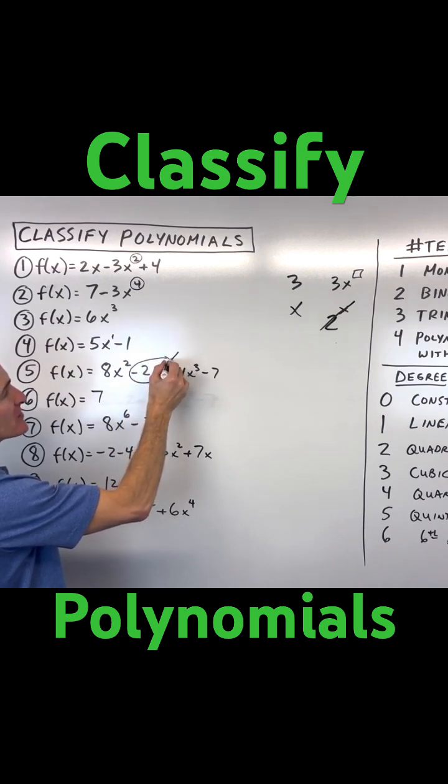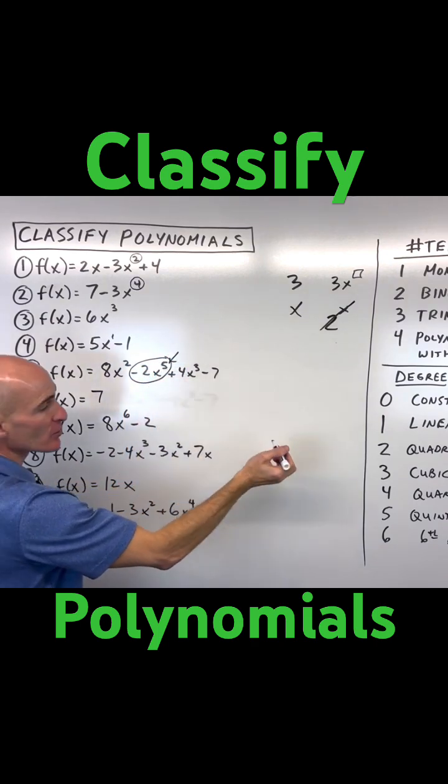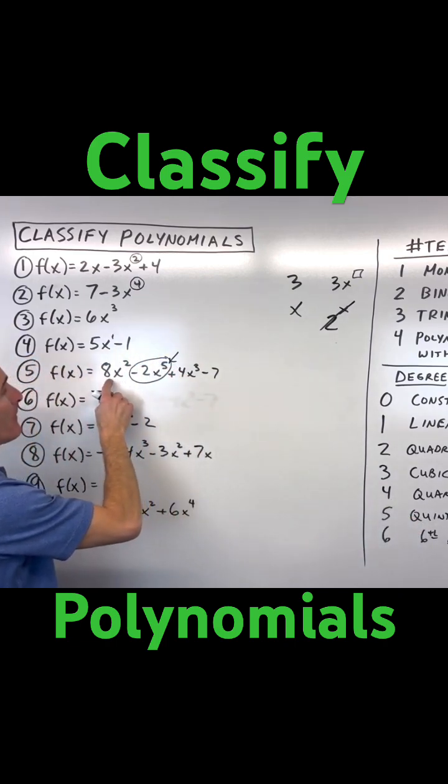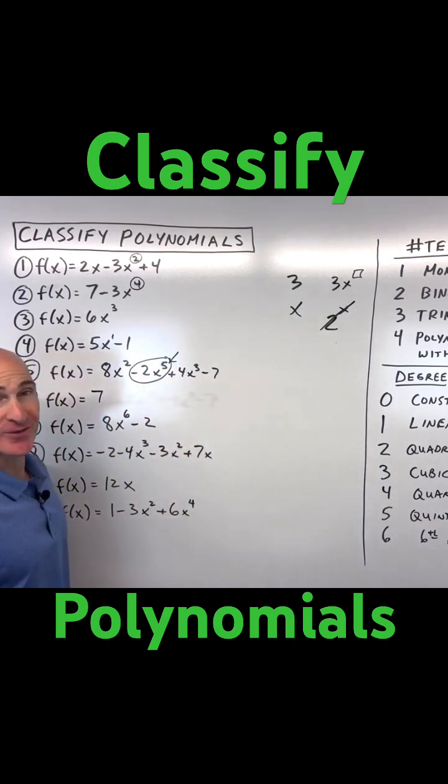term is this guy right here. Notice that degree is five, so we're going to call it a quintic polynomial with four terms.